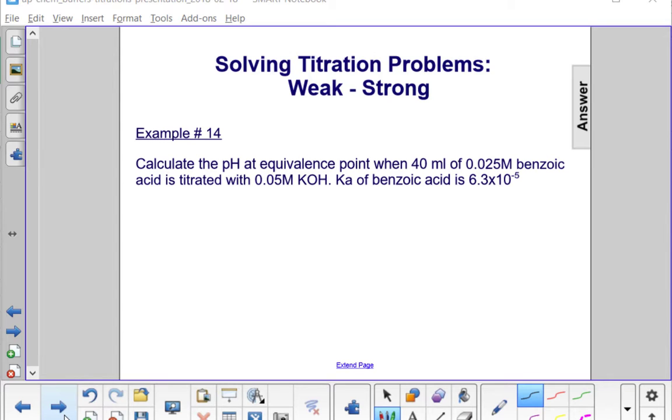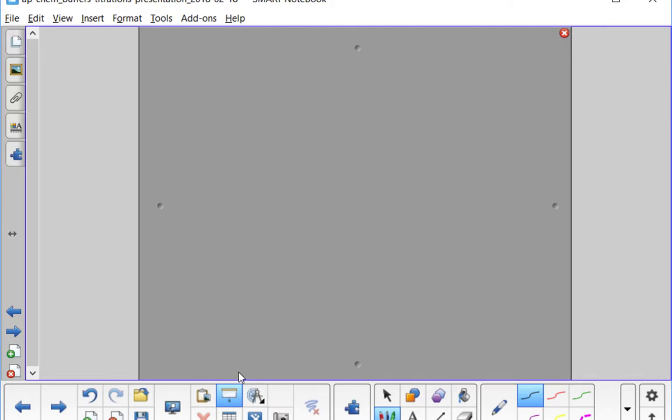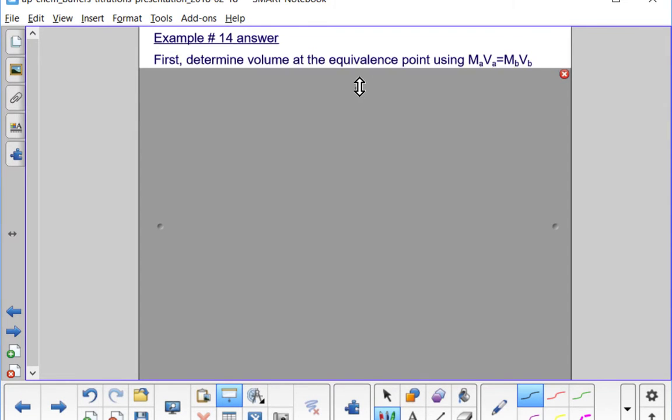So this is a continuation of the previous problem with benzoic acid where we found the pH before the equivalence point. Now we're going to find it at the equivalence point. Let's start first by figuring out how much KOH do we have to add to get to our equivalence point.